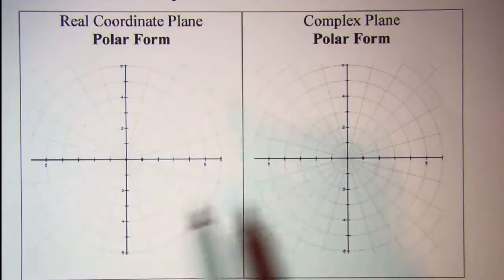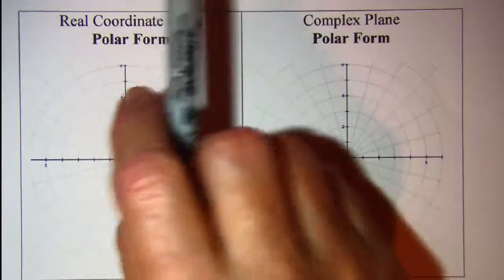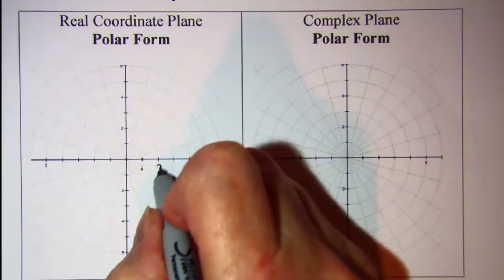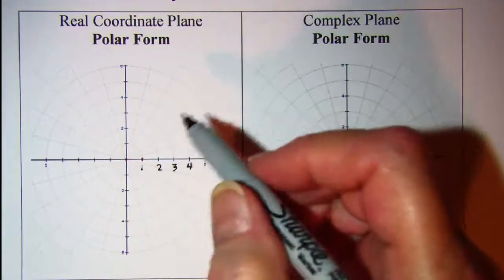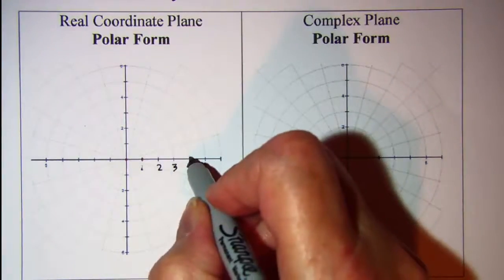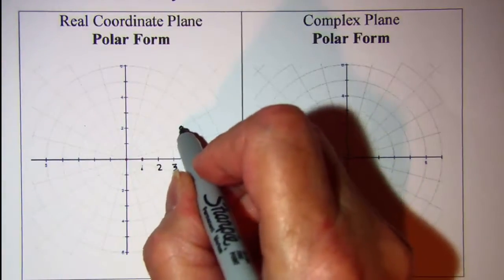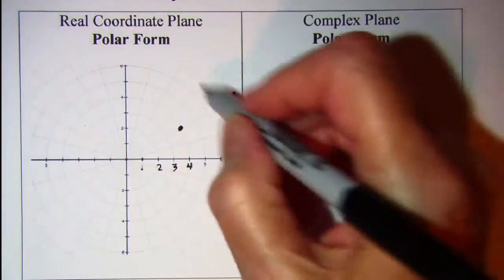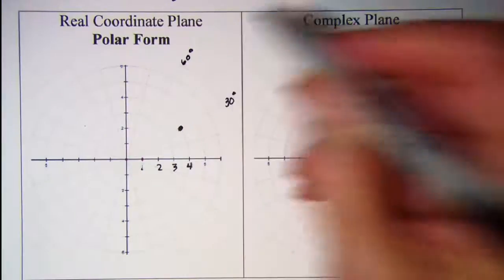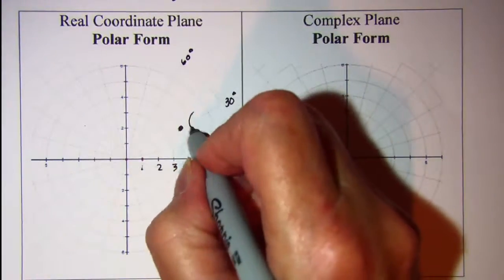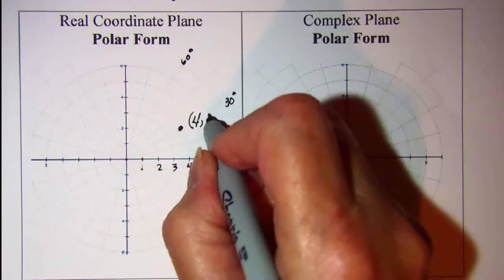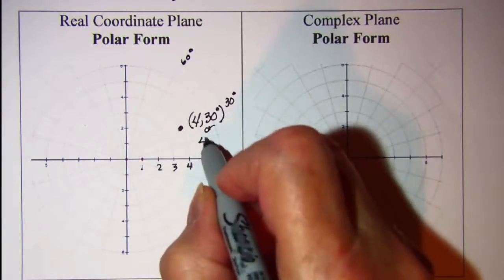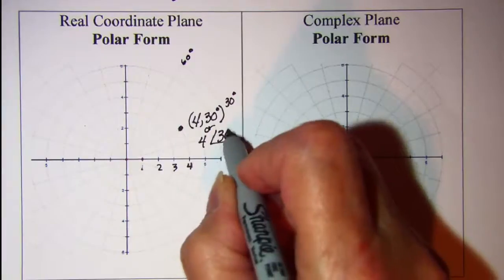We had 2√3 and 2 as our real point. That point will be 4 at 30 degrees, which is right here. So this radius is 4, this angle is 30 degrees. Some places you'll see that written as (4, 30°) or sometimes you'll see it written as 4∠30° with this notation.